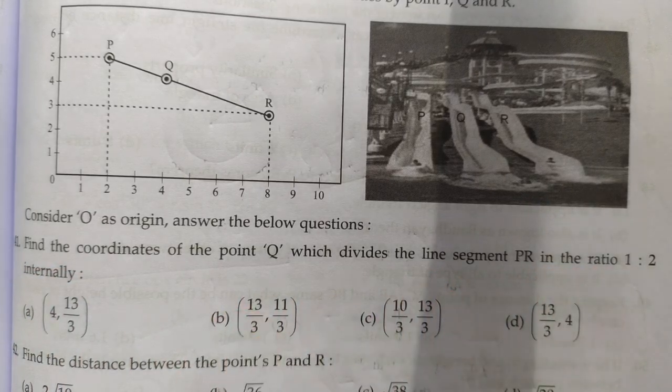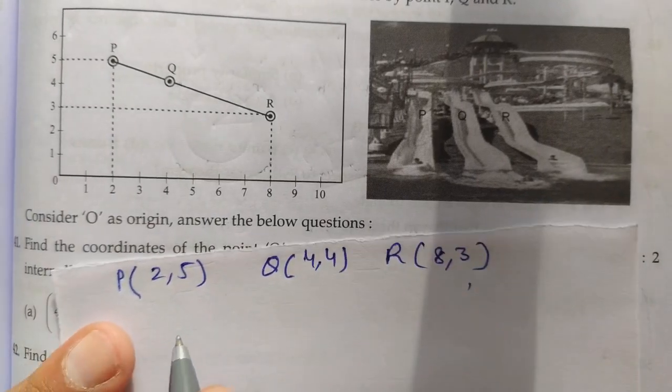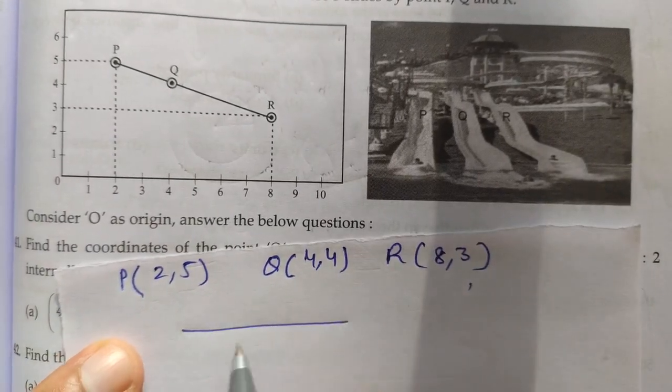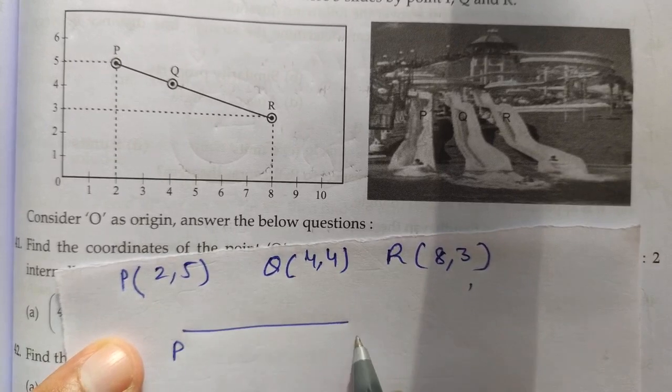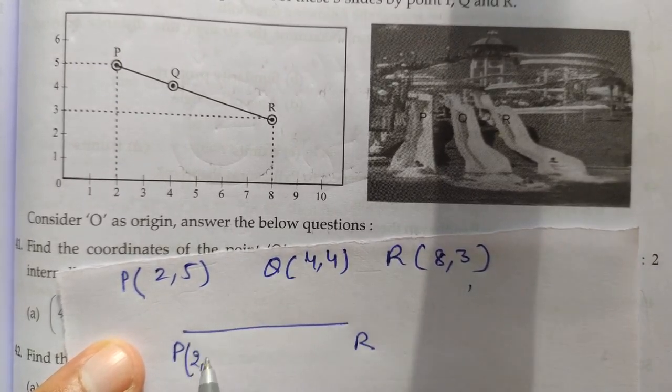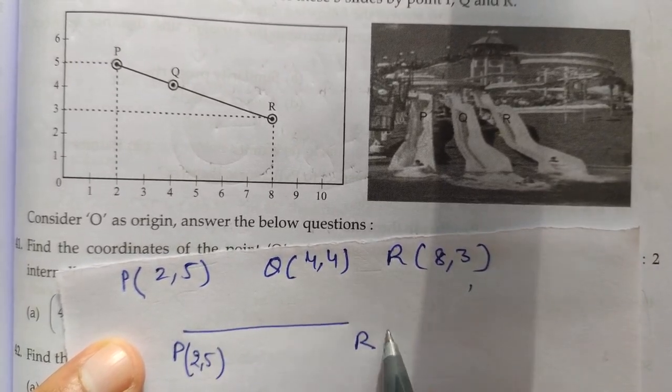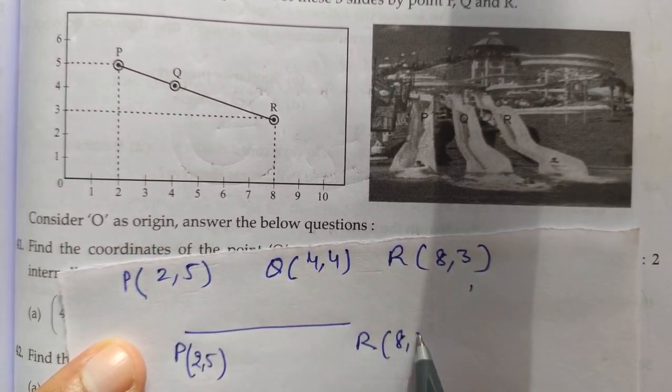So look at PR — we will consider the line segment PR. The point Q divides it. Let's set up the section formula.